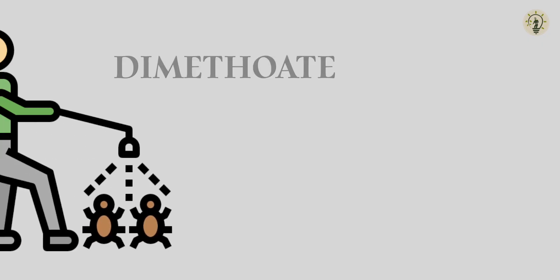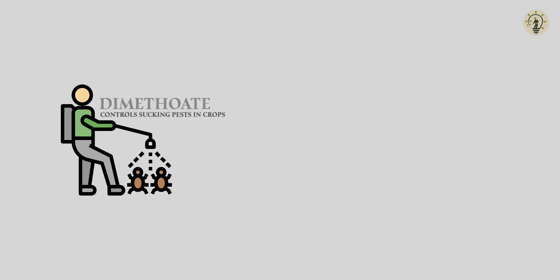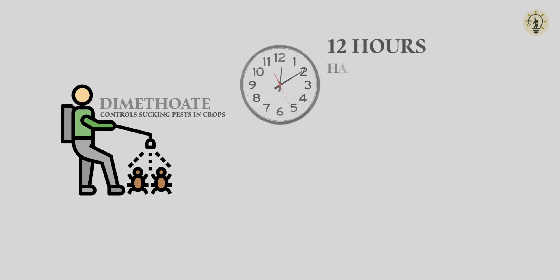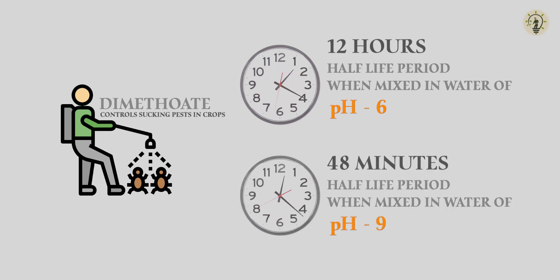Dimethoate, an insecticide which controls sucking pests in crops, has a half-life period of 12 hours when mixed in a water solution of pH 6, and has a half-life period of only 48 minutes when mixed in a water pH of 9.